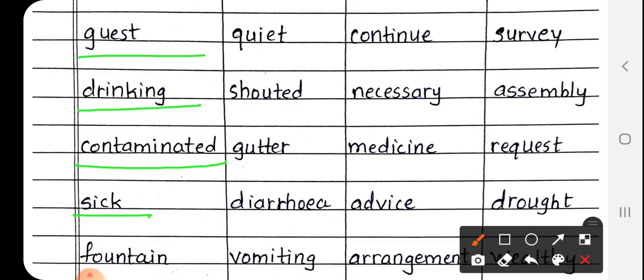Next is sick, S-I-C-K. Sick matlab beemar. Next is fountain, F-O-U-N-T-A-I-N. Fountain means fawara. Jo paani ka fawara hota hai, usse kya kehte hai? Fountain.